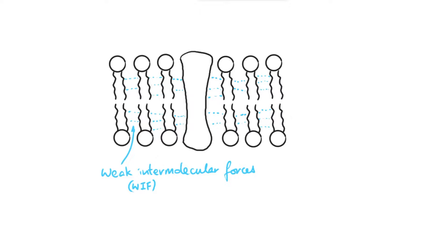However, if you increase the temperature, the phospholipids are going to gain kinetic energy and start vibrating more. Normally speaking that's fine as long as they stay roughly in the same place, but if the temperature rises really high and they gain a lot of kinetic energy, they might start to break away from one another.